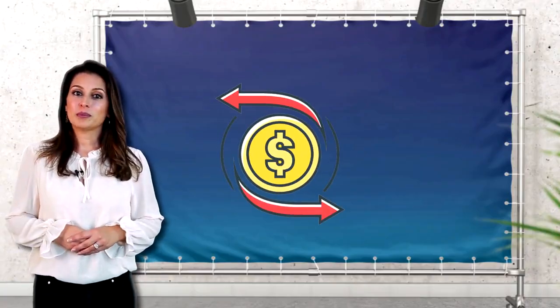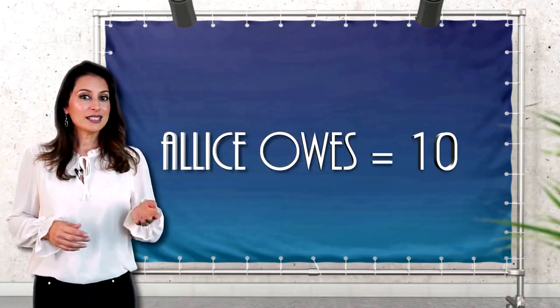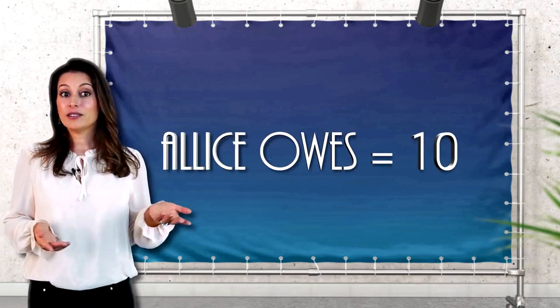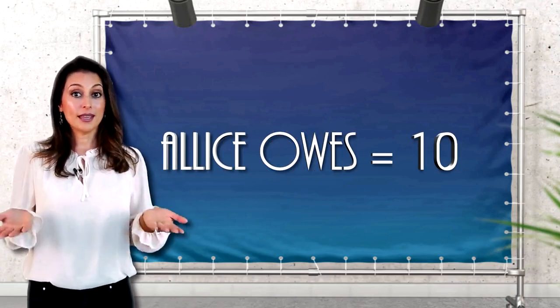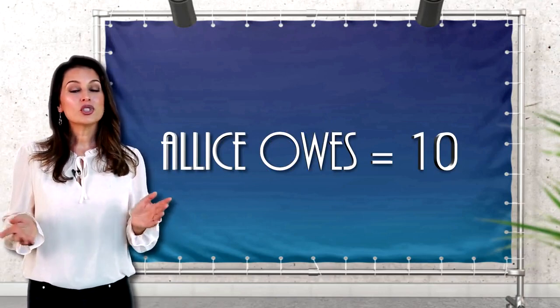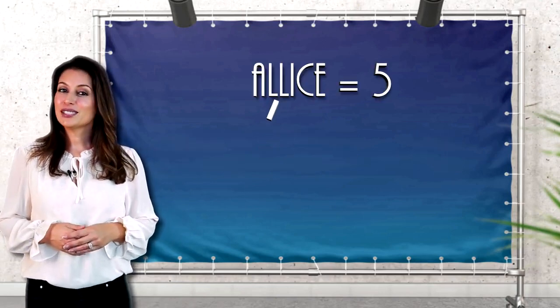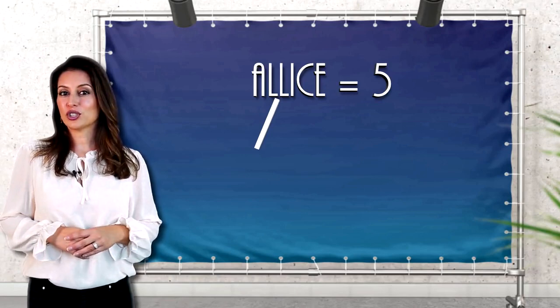The double spend problem is quite simple. Let's say Alice owes a debt of $5 to both Bob and Carol. Alice's total debt is $10, but let's assume she only has $5 currently.